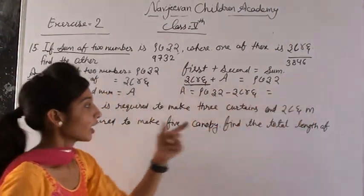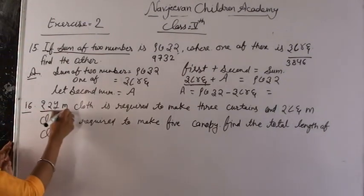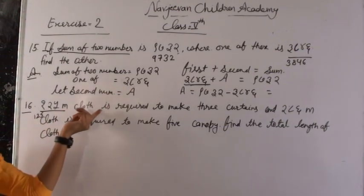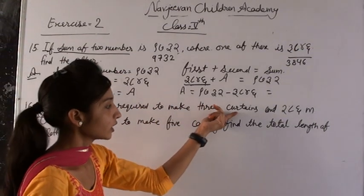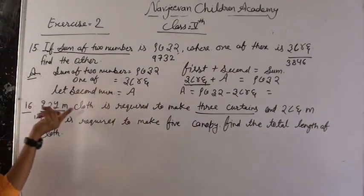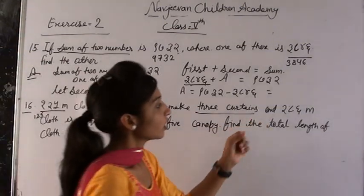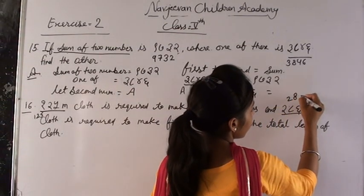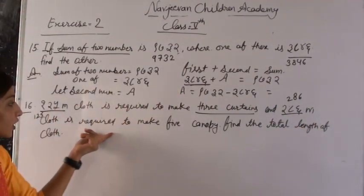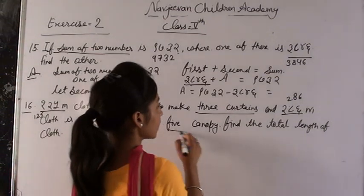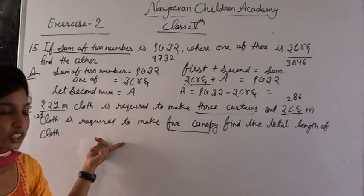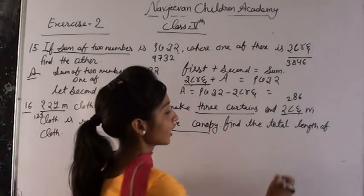Next question. 125 meters cloth is required to make 3 curtains, and 286 meters cloth is required to make 5. Find the total length.